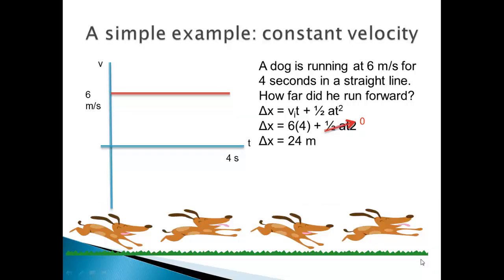In this first example, we have a dog running at a constant velocity of 6 meters per second, and he runs in a straight line for 4 seconds, so how far did he run? Well, mathematically, you can see it's a very straightforward answer since the acceleration is zero, that whole term drops out, and the answer is 24 meters.